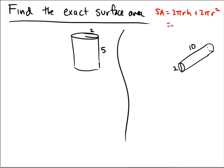Sometimes we can abbreviate or shorten this a little bit by factoring out the common 2, the pi, and the r, giving us 2πr(r + h). I'll use whichever form is more convenient in context as we go through these examples.